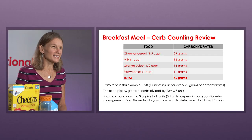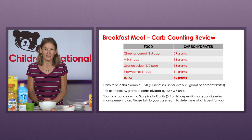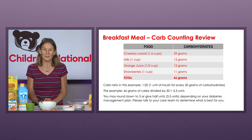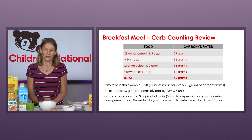Let's review how we figure out how much insulin to give for this meal. It had a total of 66 grams of carbohydrate. Divide that by your carb ratio given by your provider — in this example, one unit for every 20 grams of carbohydrates. So take 66 grams divided by 20, and on my calculator I get 3.3 units. If using insulin by injection with a pen, round down to a whole unit — so I would inject three units of insulin.